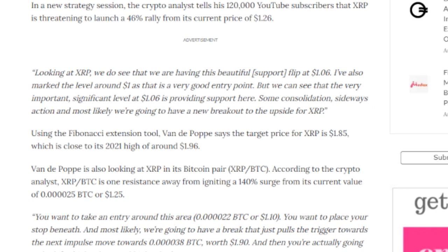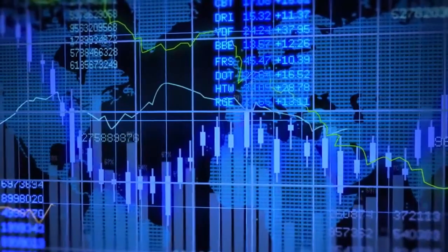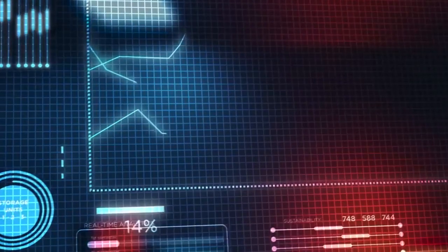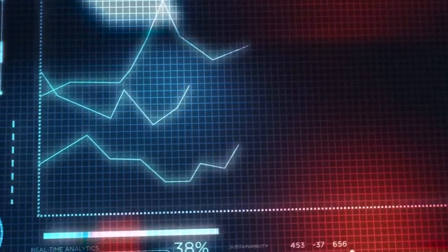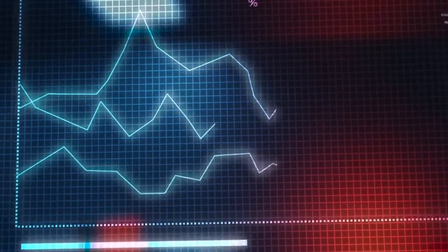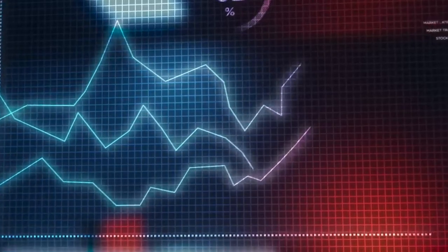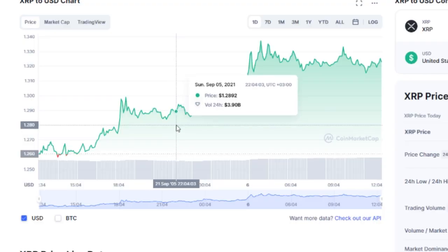Brad Garlinghouse, CEO of Ripple, has been granted to seek data on XRP transactions from Binance. The CEO of Ripple has been approved access to Binance documents of XRP transactions. Sarah Netburn, the presiding judge in Ripple's ongoing lawsuit with the Securities and Exchange Commission, has granted Brad Garlinghouse's motion to obtain documents from Binance.